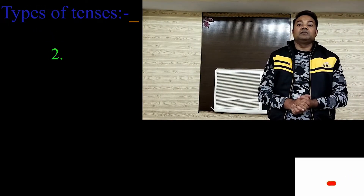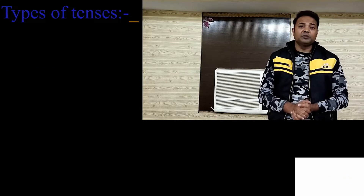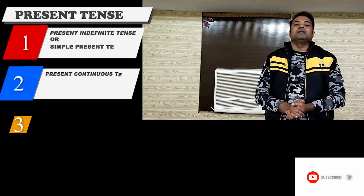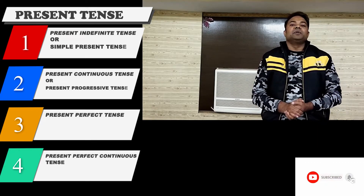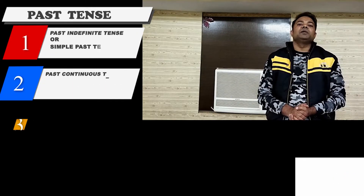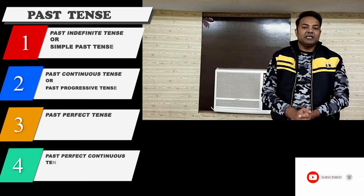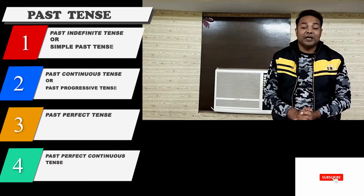If we categorize tenses, there are three kinds: present, past, and future. In present tense there are four subcategories: present indefinite tense — also known as simple present tense — then present continuous tense, also known as present progressive tense, then present perfect tense, and present perfect continuous tense. In past tense the pattern is the same: past indefinite — also known as simple past — past continuous, also known as past progressive tense, then past perfect, and past perfect continuous.